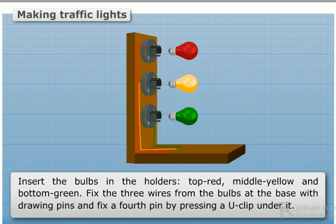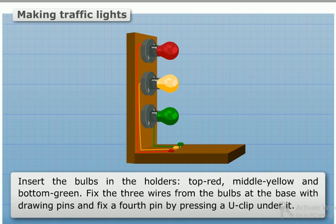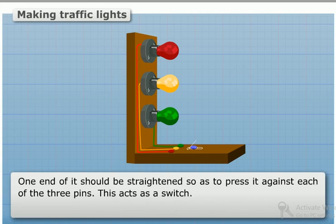Insert the bulbs in the holders: top red, middle yellow, and bottom green. Fix the three wires from the bulbs at the base with drawing pins and fix a fourth pin by inserting a U-clip under it. One end of it should be straightened so as to press it against each of the three pins.